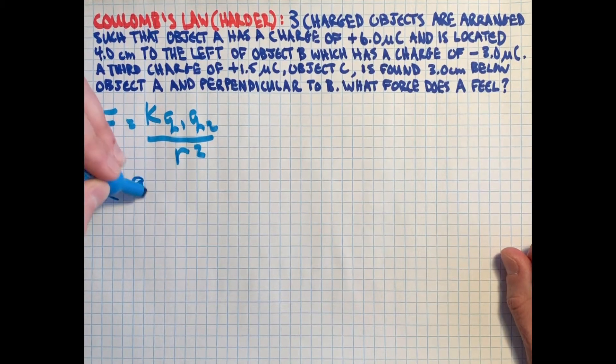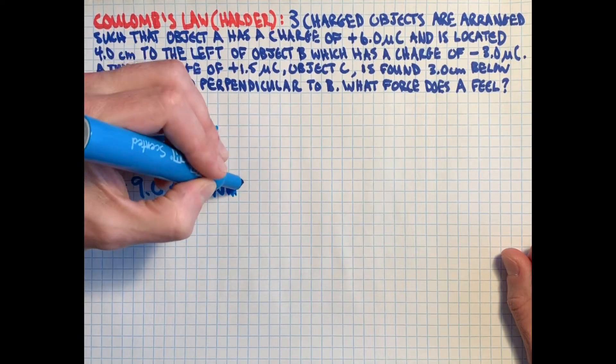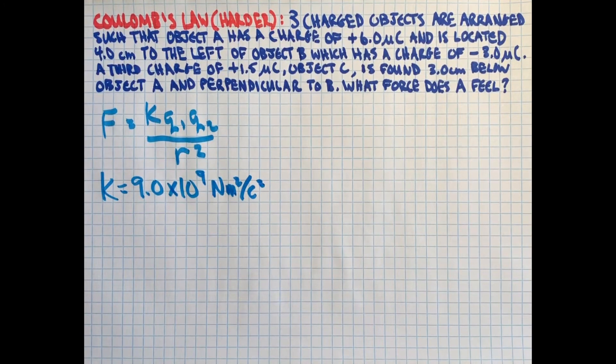Again, we'll recall that K is 9.0 times 10 to the positive 9 newtons meters squared per coulomb squared. That is quite a big number, especially when we compare it to gravity, and this is why this force dominates most of your everyday life. I know you probably think you're more familiar with gravity because you throw things up and it falls back down and you stick to the floor and all those sorts of things, and you think, well, this is much more esoteric, charges of coulombs and all this stuff, and you're right in that sense.